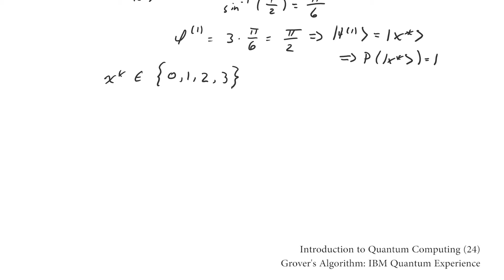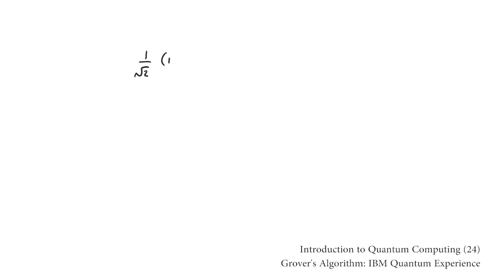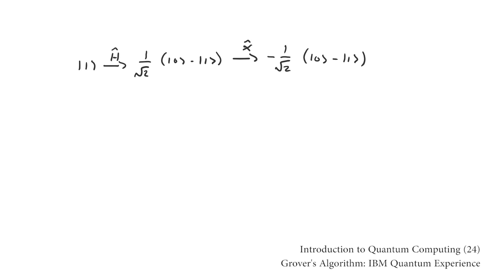Before implementing Grover's algorithm, let's review how to get a negative sign in front of a basis state. If we apply a NOT gate to the state (1/√2)(|0⟩ − |1⟩) we swap the |0⟩ and |1⟩, which is equivalent to adding a negative sign in front of the original state. We can create (1/√2)(|0⟩ − |1⟩) by applying a Hadamard gate to |1⟩. If we apply a second Hadamard gate after NOT-ing (1/√2)(|0⟩ − |1⟩) we end up with |1⟩ again but with a coefficient of −1. To get a negative sign in front of |0⟩ we can do the same thing. You can get a negative sign in front of the basis states of a two-qubit system with the same procedure by making the NOT a controlled-NOT with the second qubit as the control bit.